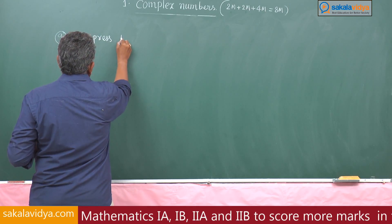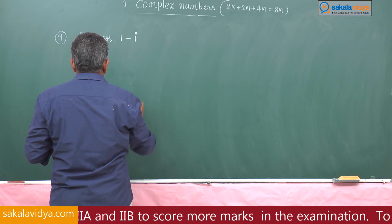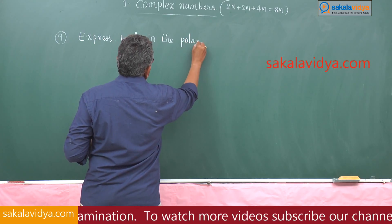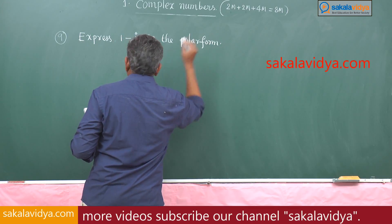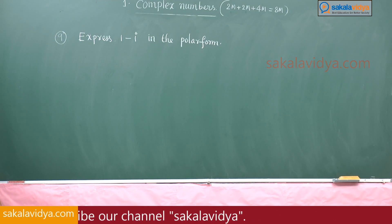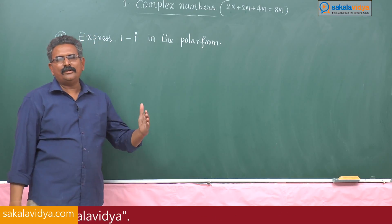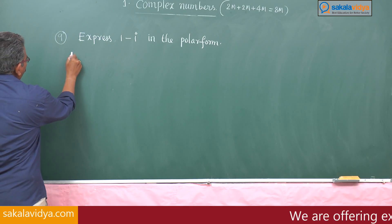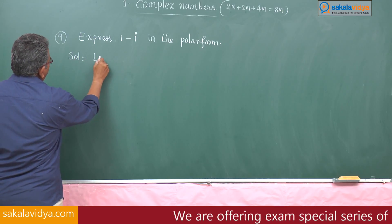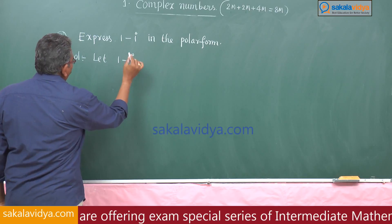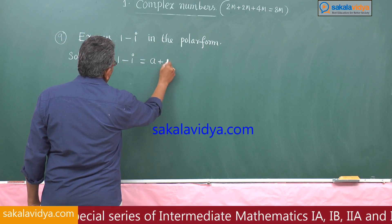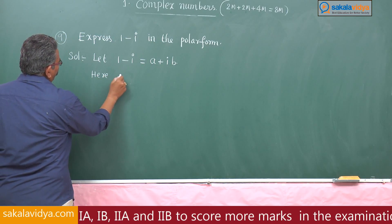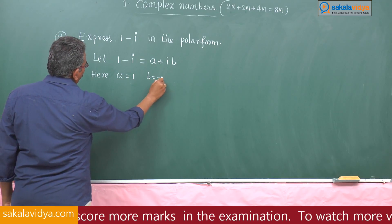Express 1 minus i in the polar form. Note that polar form, modulus amplitude form, and trigonometric form are all the same. Let us consider 1 minus i equal to a plus i b. Here a is equal to 1 and b is equal to minus 1.